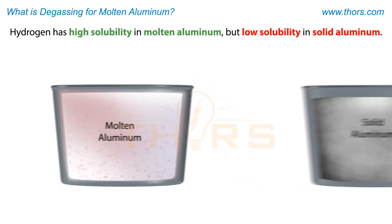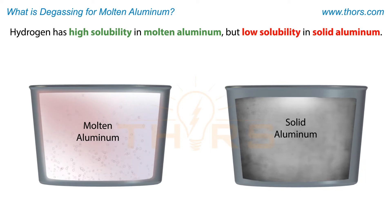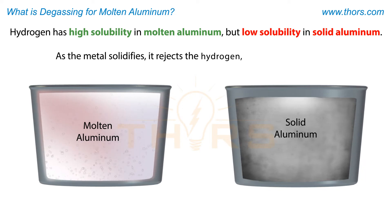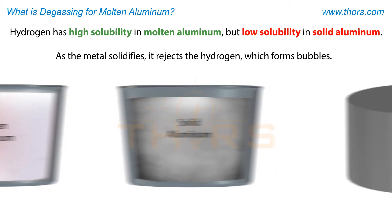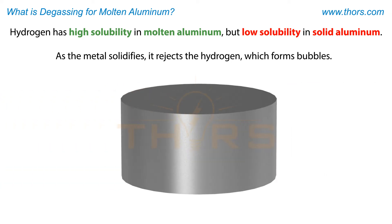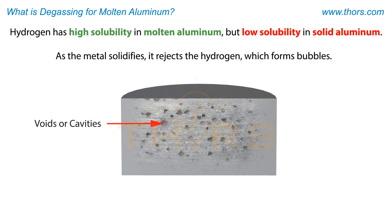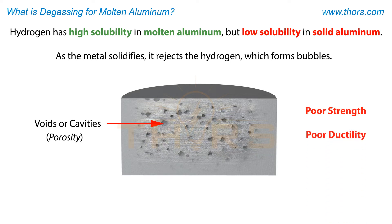Hydrogen has high solubility in molten aluminum but low solubility in solid aluminum. This means that as the metal solidifies, it rejects the hydrogen, which forms bubbles upon solidification. The bubbles of hydrogen will leave voids or cavities known as porosity.